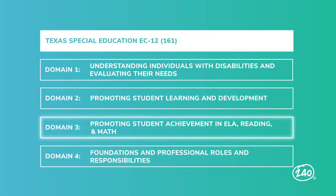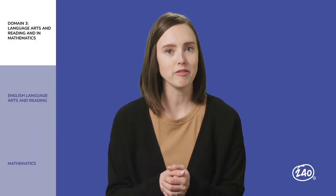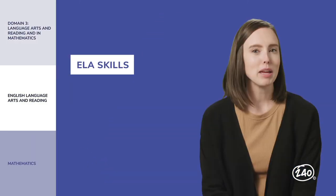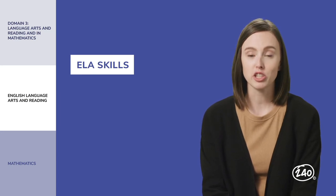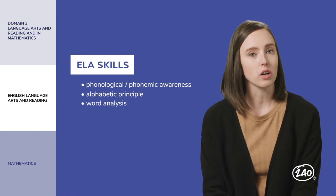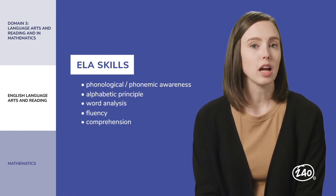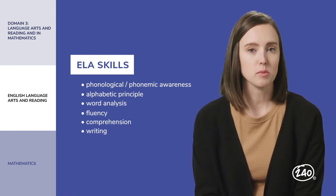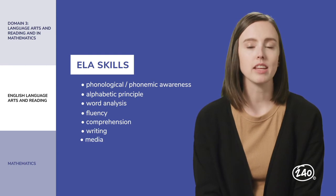Now on to domain three, which covers English language arts and math. Domain three counts for one-third of your test score and consists of two competencies — one for ELA and one for math. A big portion of the ELA competency covers foundational reading skills such as phonological and phonemic awareness, the alphabetic principle, word analysis, and fluency. Reading comprehension is also addressed, as well as writing skills and visual media.